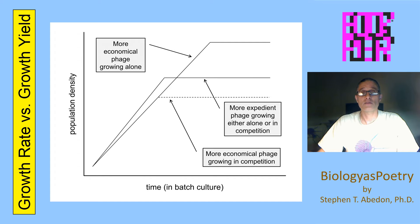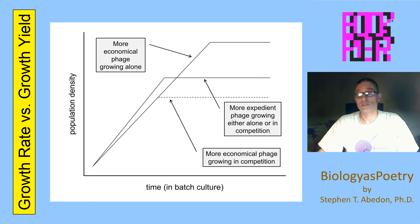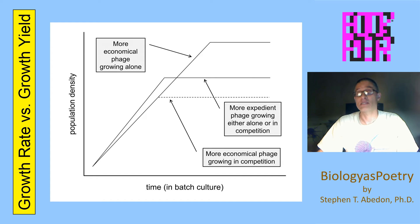This figure is based upon a phage experiment done by Abaddon et al. 2003, but is generalizable to other organisms. We're talking here about growth in a batch culture, which means that there is growth until the organisms run out of resources and then there's no growth after. So the horizontal lines here are not steady states, but instead represent simply a constant maximum peak density of the organisms.